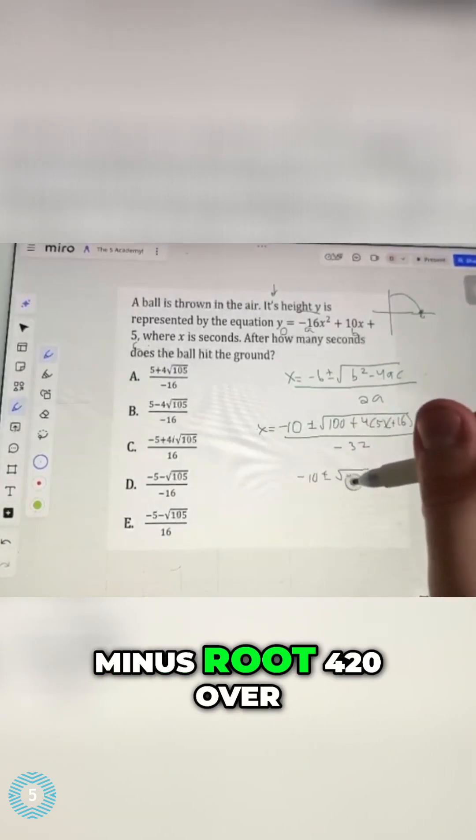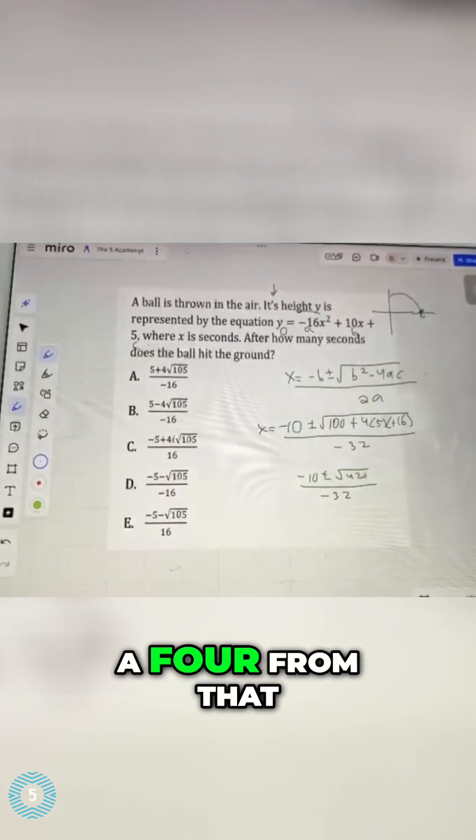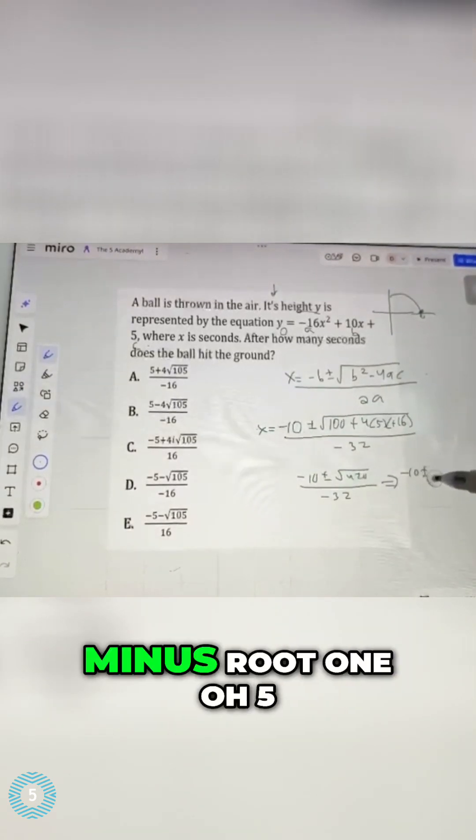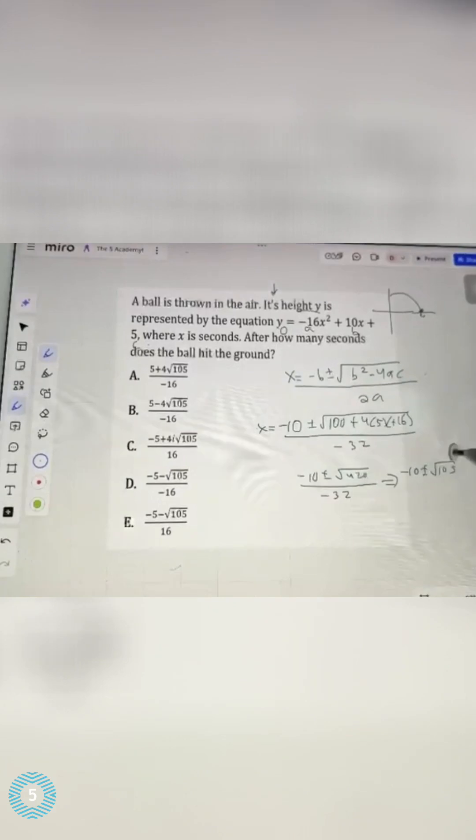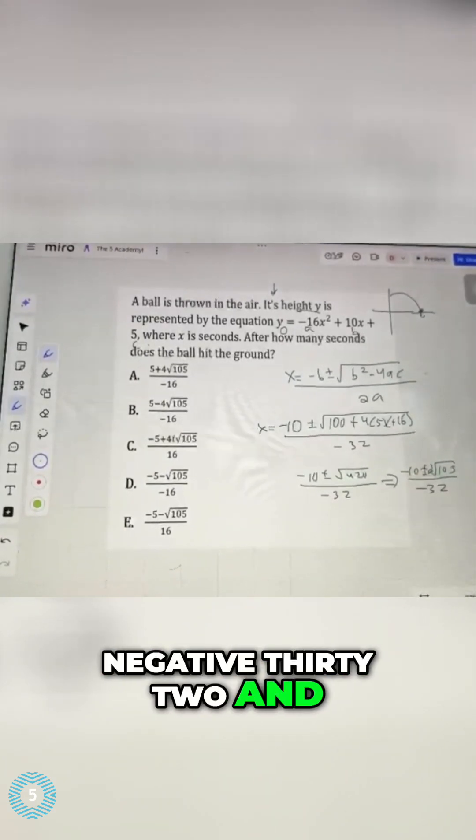Negative 10, plus or minus root 420 over negative 32. I can factor out a 4 from that. I'll get negative 10 plus or minus root 105 times 2 all over negative 32.